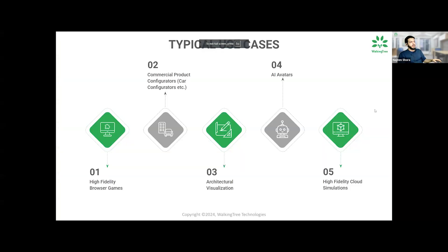Now let's talk about typical use cases. The most obvious is games — you can have current-gen games on the browser, something you might see on PlayStation 5 or modern PCs, with leading-edge high-fidelity graphics that you cannot do with just WebGL. This is similar to what Xbox Cloud Gaming does, but this is Unreal Engine's version. Apart from games, a lot of companies use this for product configurators, for example car configurators, where you can get a very realistic version of the car that the customer is trying to configure.